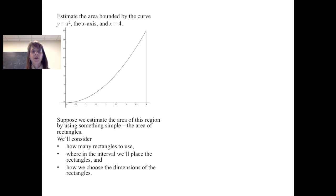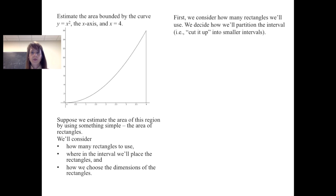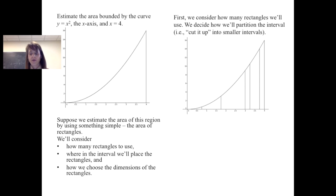We're going to consider how many rectangles to use, where we'll place the rectangles in the interval, and how we're going to choose the dimensions of the rectangles. The first thing we'll decide is how many rectangles to use. We're going to partition the interval — cut up the interval from 0 to 4 into smaller intervals.